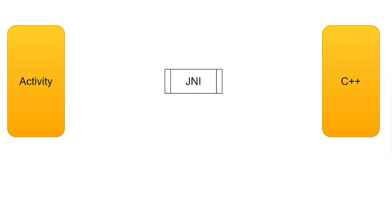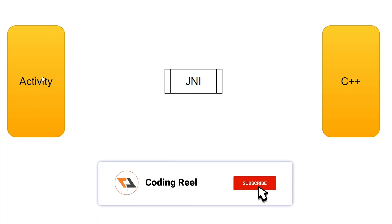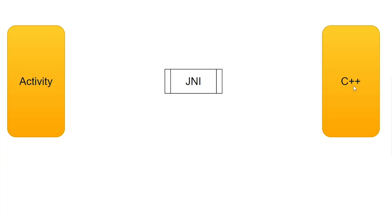Let's first check out the diagram. This is the Activity class, and then we have a JNI bridge, and then we have a C++ file. The Activity communicates with the JNI bridge, and then the JNI bridge communicates with the C++ class.